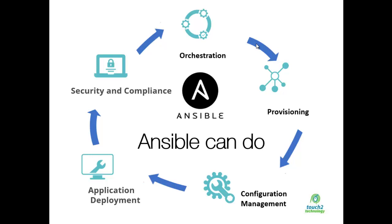Orchestration: configurations alone don't define your environment — you need to define how multiple configurations interact and ensure disparate pieces can be managed as a whole. Ansible brings order out of complexity and chaos. Ansible provides orchestration by aligning business requests with applications, data, and infrastructure. It defines policies and service levels through automated workflows, provisioning, and change management, creating an application-aligned infrastructure that can be scaled up or down based on the needs of each application.